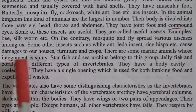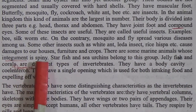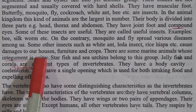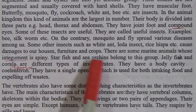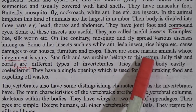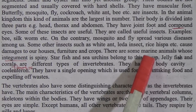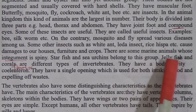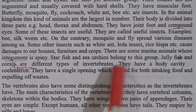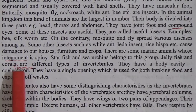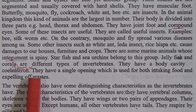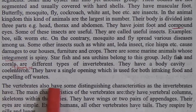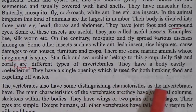There are some marine animals whose integument is spiny. Integument means the outer cover of their body. Starfish and sea urchins belong to this group — their body is covered with spines. Jellyfish and corals are different types of invertebrates. They have a body cavity and a single opening which is used for both taking in food and expelling waste.